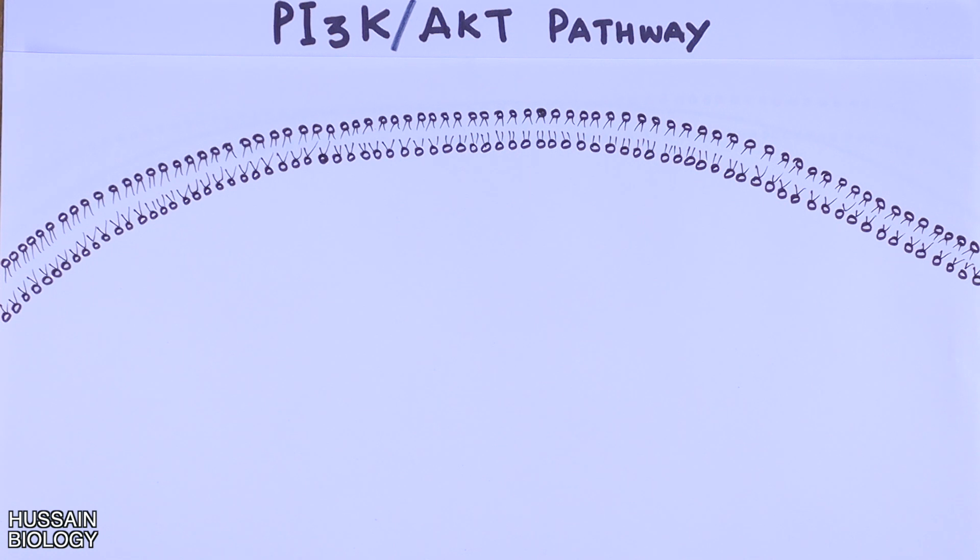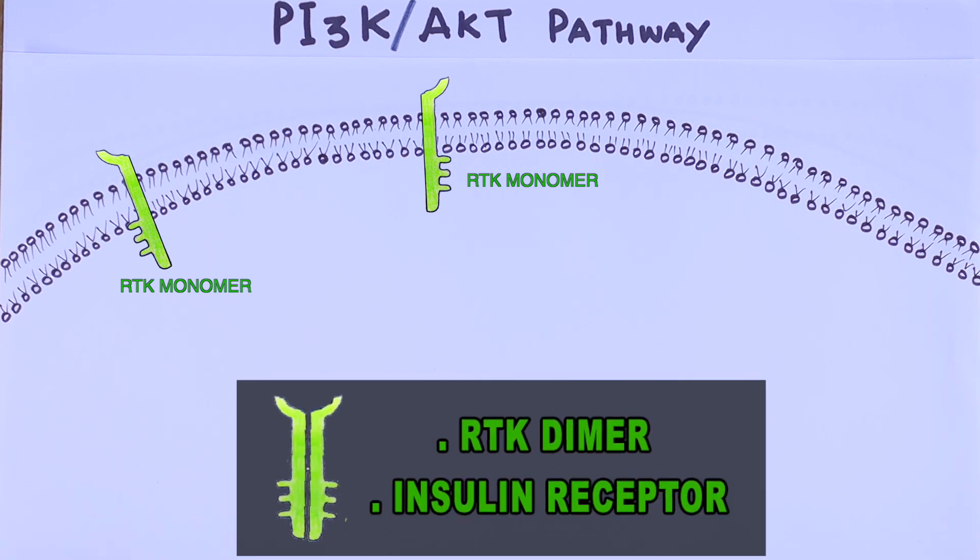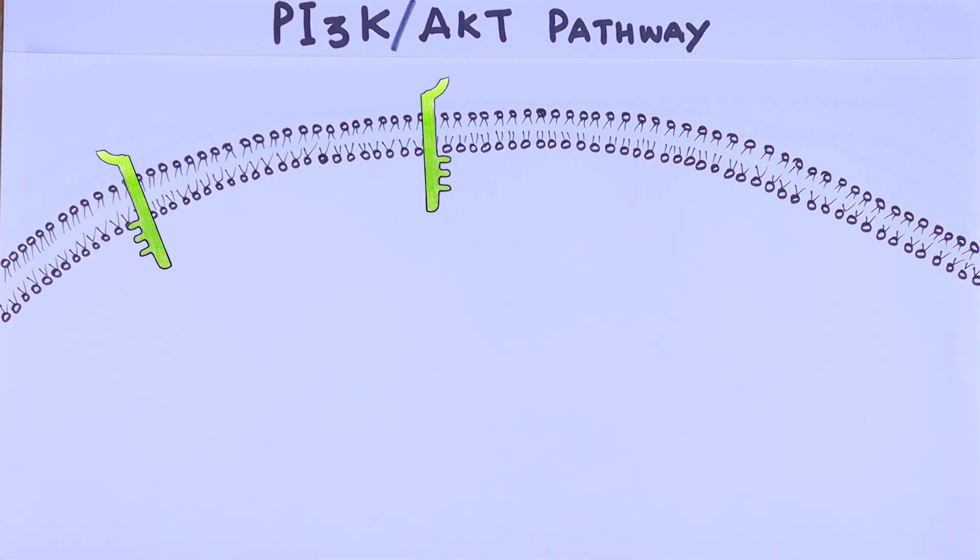To start the signaling pathway, we have the cell membrane as shown in the diagram. On this cell membrane we can see the RTK monomers. These receptor tyrosine kinase monomers are the receptors for this pathway, and in this pathway these receptors are the insulin receptors. But it must be noted that these RTK monomers need dimerization first in order to get into their active state.